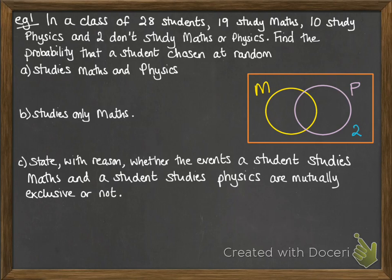If we do the 19 plus the 10, that gives us 29, so we know we must have an overlap of 3, because we know that that actually has to add up to 26. So then we've got the 16, to make that total for maths be 19, and the 7, so that the total for physics is 10.